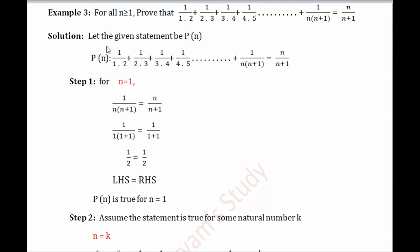Let the given statement be P(n). We always start the proof by naming the given statement. Step 1: we show that the given statement is true for at least the first natural number, that is 1. We replace all n by 1 and get 1/2 equals 1/2, so left hand side equals right hand side. Therefore P(n) is true for n equals 1.